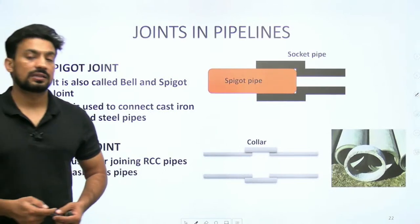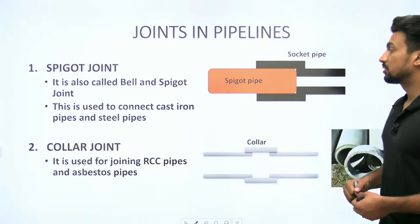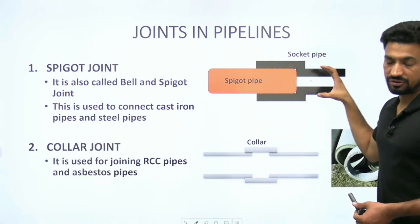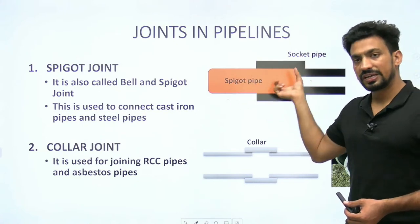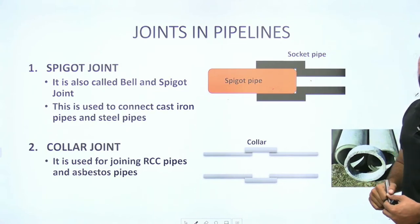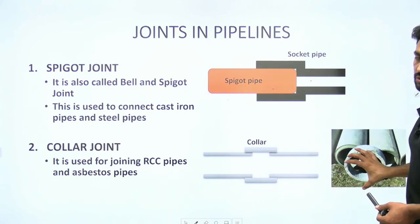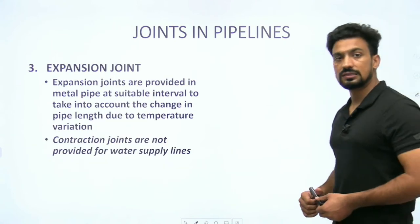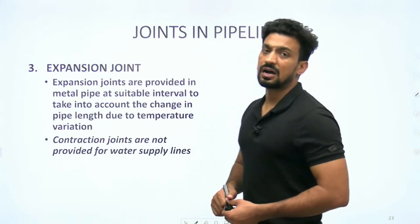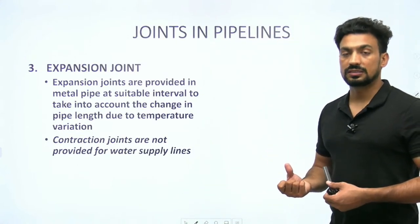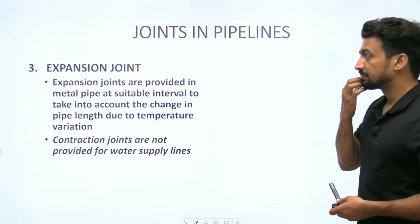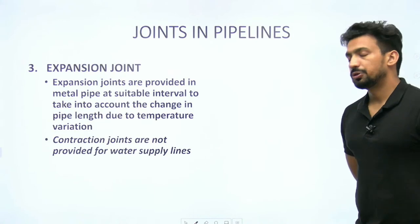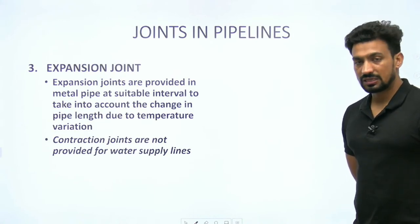Pipes को connect करने के लिए joints आते हैं। Socket and spigot joint (bell and spigot joint) में एक घंटी जैसी आकार की socket pipe में spigot pipe fit हो जाती है। Collar joint का इस्तेमाल concrete या RCC pipes में दो pipes को connect करने के लिए होता है। Expansion joints metallic pipes में suitable interval पर provide किए जाते हैं ताकि temperature variation के कारण pipe length में जो change आए उसे accommodate किया जा सके। Water supply scheme के लिए contraction joints provide नहीं करते।